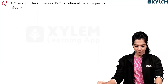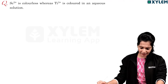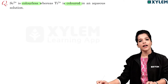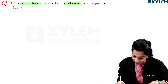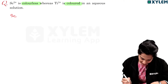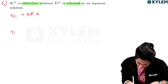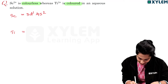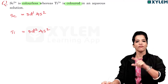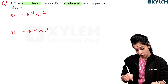Next question: Scandium 3+ is colorless whereas Titanium 3+ is colored in aqueous solution. Let us first write the electronic configuration. Scandium is 3d1, 4s2 and Titanium is 3d2, 4s2. This electronic configuration of the 3d series is very important.